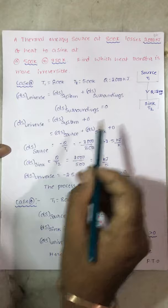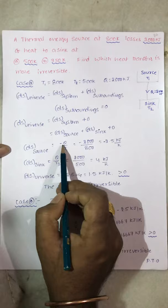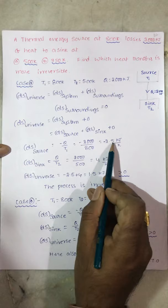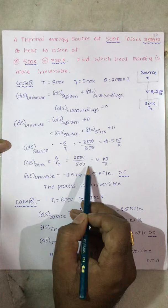Let us calculate the change in entropy for the source. DS equals DQ by T. Since heat is rejected from the source, Q is negative: minus 2000 divided by T1 (800K) gives minus 2.5 kJ per Kelvin. For DS of sink, heat is added, so no negative sign: 2000 divided by T2 (500K) gives 4 kJ per Kelvin.